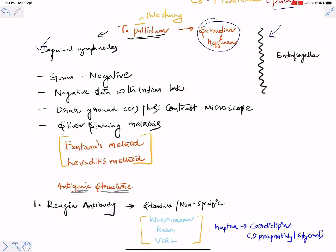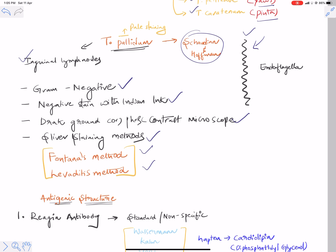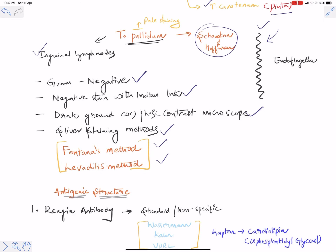From a microbiology perspective: T. pallidum is gram negative and does not stain with regular stains. Negative staining with Indian ink is commonly used; it can be diagnosed under a dark-field or phase-contrast microscope. Silver staining methods are also used. The organism is slender, has many coils around its long axis, looks thread-like, and is motile.